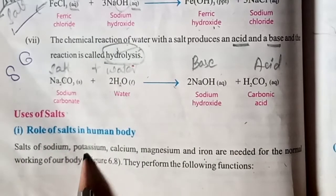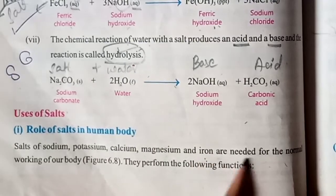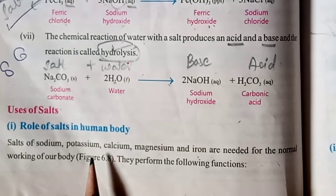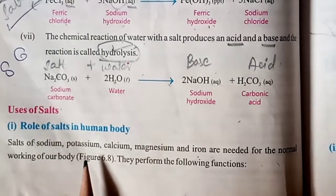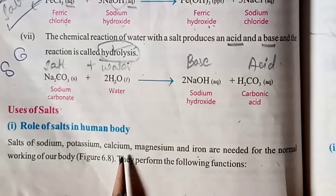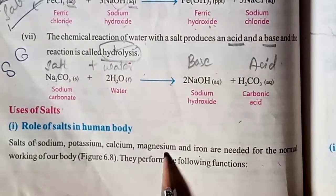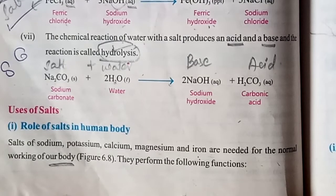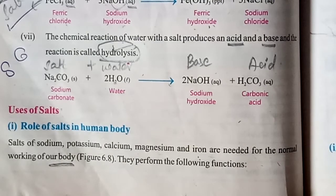Sodium, potassium, calcium, magnesium, and iron are needed for the normal working of our body. We need these salts in our working conditions. They perform the following functions. Every salt has a function — why it is used and what is its main role in your body. We will study this topic now.